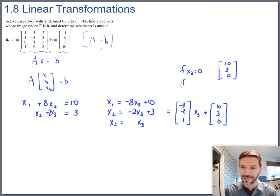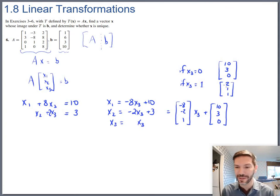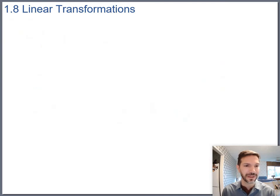You could produce other vectors that generate b as well. Another possibility that would be pretty easy to work out is if x3 is 1. If x3 is 1, then you add these two together, you would get 2, 1, 1. So 2 of the first vector, 1 of the second vector, 1 of the third vector should also produce 1, 6, 3, 10. So we've found two vectors x whose image under T is b. And we have proved that x is not unique.